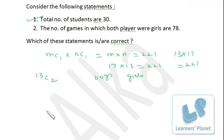So 13C2 is 13 into 12 by 2. So that is 78. So definitely, there will be 78 games in which both the players were girls. So this statement is also correct.